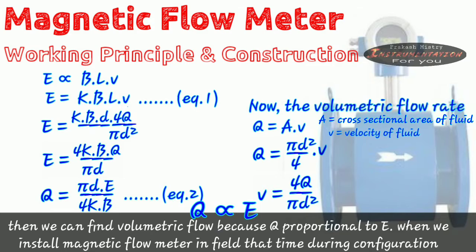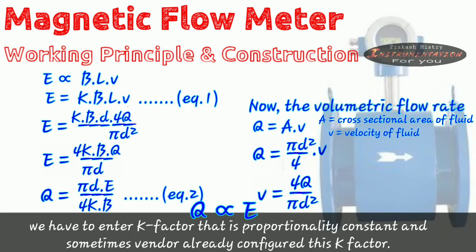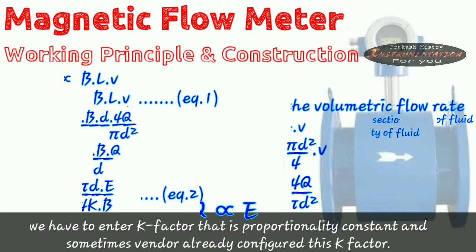When we install magnetic flow meter in the field, during configuration we have to enter the k-factor, that is proportionality constant. And sometimes vendor already configured this k-factor.